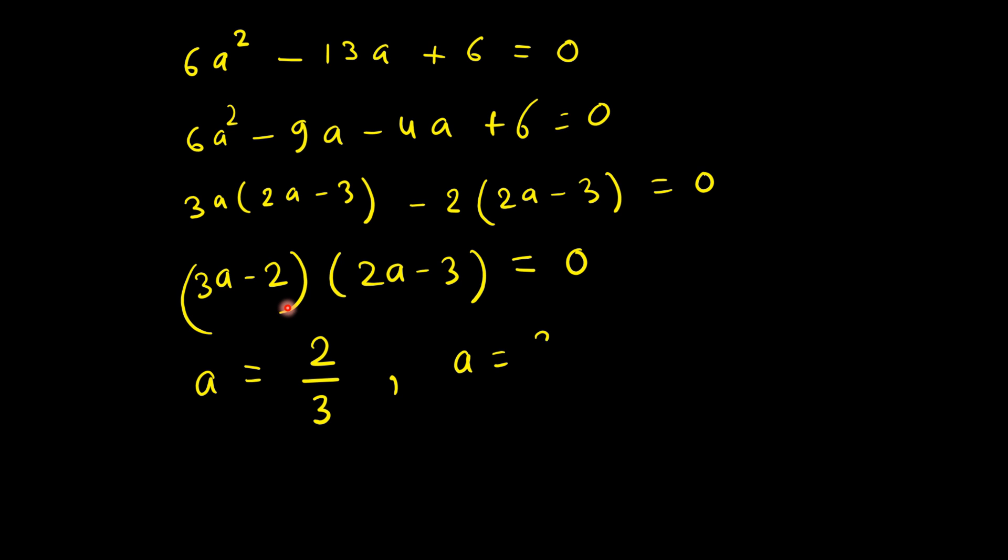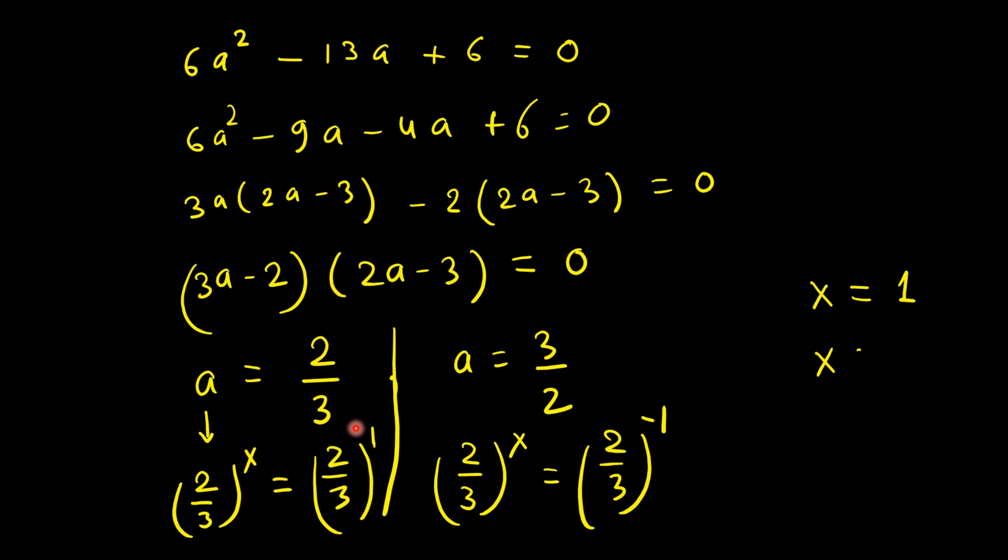Now let's factorize this. We break it in such a way that we have a common term. This factors as (3a - 2)(2a - 3) = 0, so a will be either 2/3 or 3/2. Remember a was (2/3)^x, so this is (2/3)^1 and this is (2/3)^(-1), so x can be either 1 or -1.